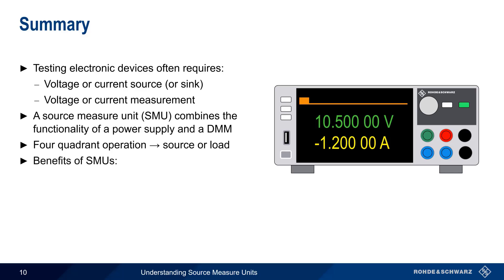Source measure units provide numerous benefits. Since they can replace multiple instruments, they take up less bench space and reduce overall equipment cost. Easier synchronization enhances both manual and automated operation, and the shorter settling time provided by most SMUs means faster measurements. And finally, source measure units provide higher precision than stand-alone power supplies or multimeters.